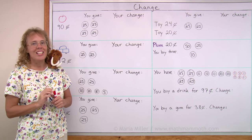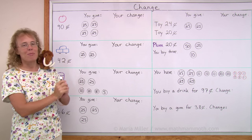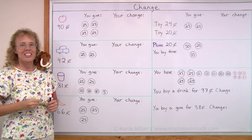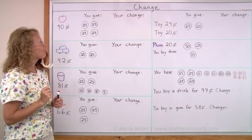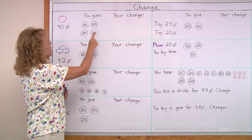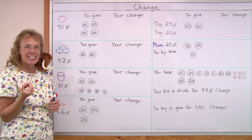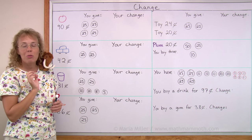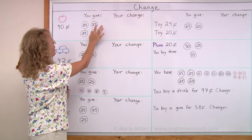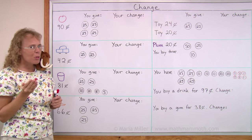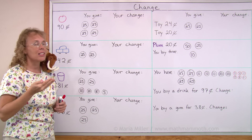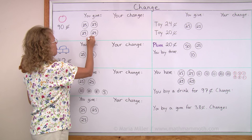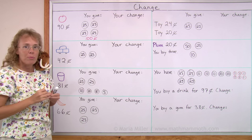That was many words, so let's look at it with an example. Let's say you go buy an apple and it costs 90 cents. You give this much money because you don't have exactly 90 cents in your purse, so instead you give four quarters. Four quarters makes 100 cents. Let me write it here. So you're overpaying.